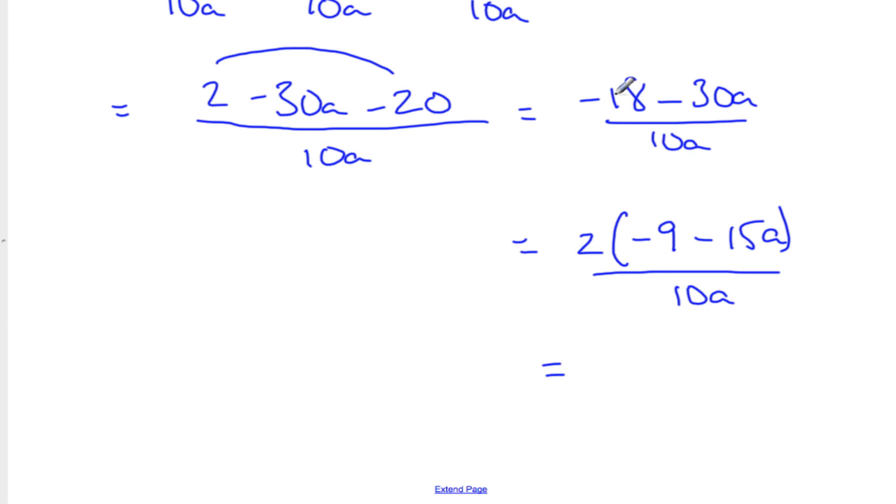Okay. So we can cancel down the 2 and the 10. So if I look at this fraction here, which is 2 tenths, that can really become 1 fifth. And so I end up then with negative 9 minus 15a over 5a. Okay. And that is our final answer. Can we cancel the a's? No, because there's a minus sign there. If it was multiplied, I could cancel. Okay. So there's no a with the 9, is there? We can't divide everything by a. Right. All right.